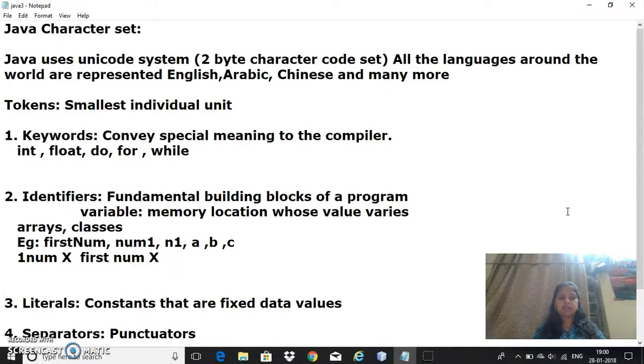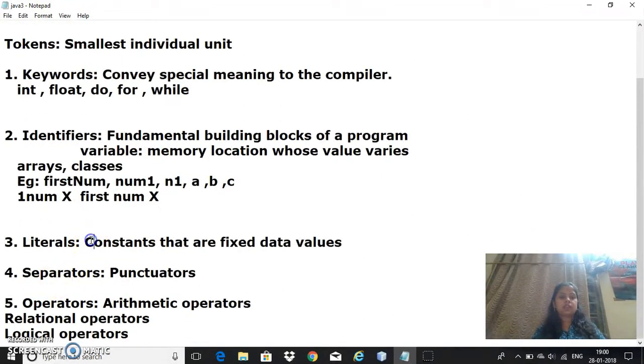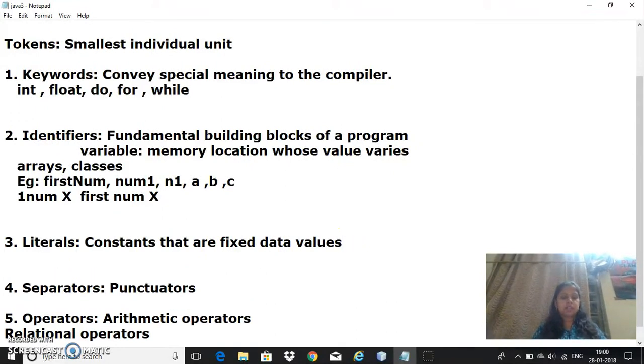Next is literals. These are constants that have fixed data values throughout the program. Under literals we have different types. The first one is numeric literal, which contains the numeric part like 12 or 3567 - any number is a numeric literal.